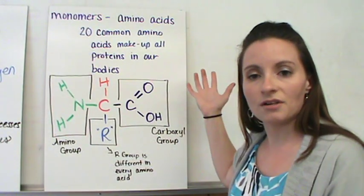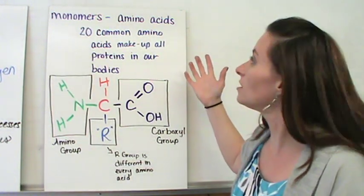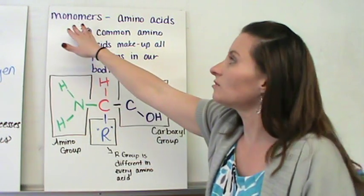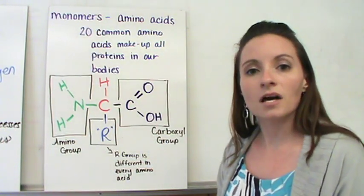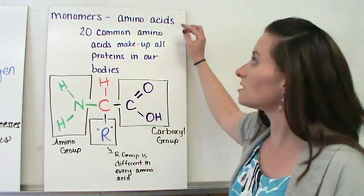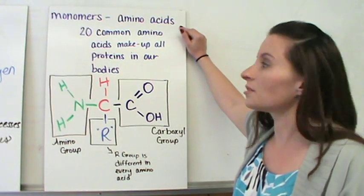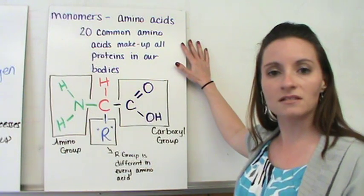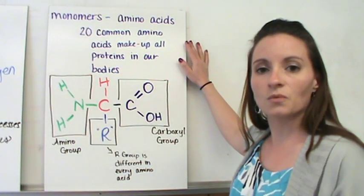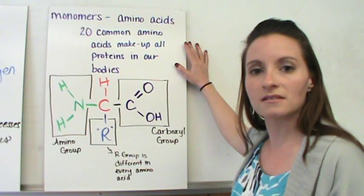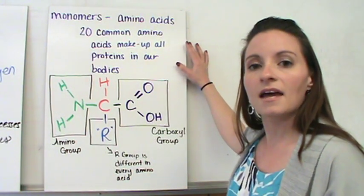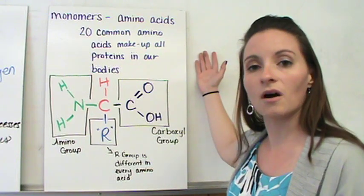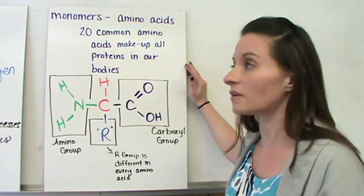Now, as you know from our organic molecules video, monomers are the single units of any of the organic compounds. The monomers of proteins are called amino acids. Now, there are about 20 common amino acids within our body, and we'll talk about it later, but these amino acids get put together in forms from our nucleic acids, and then help basically do all the functions within the rest of our body.